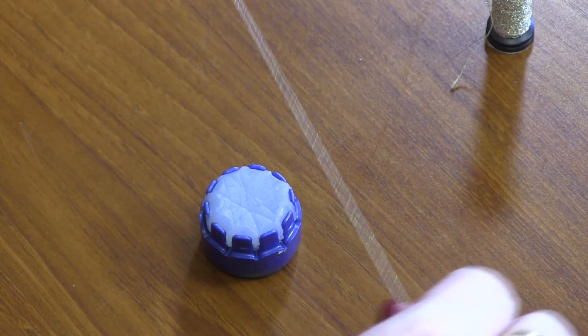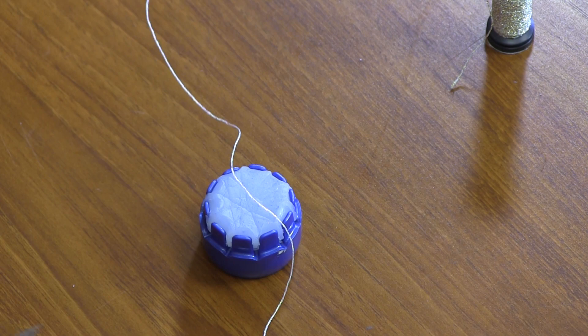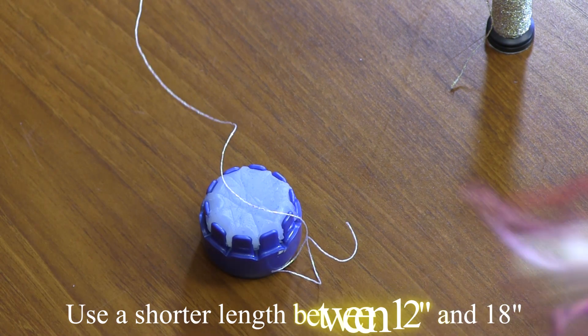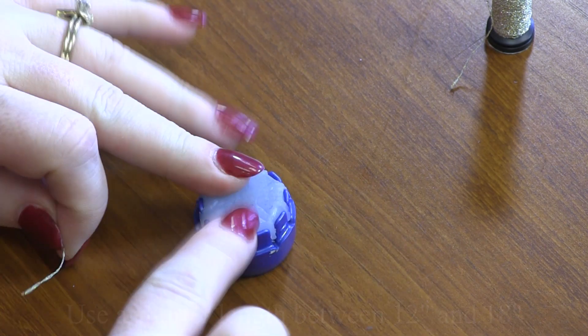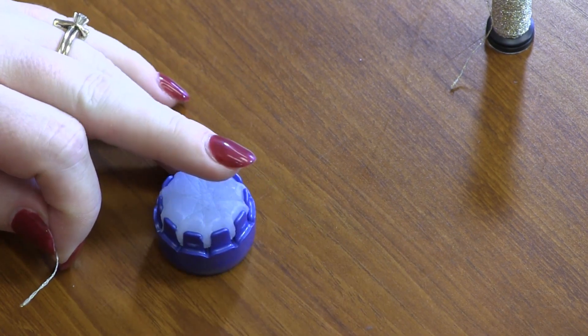Tips on how to use metallic floss in your stitching. Tip 1: I use a shorter length, between 12 and 18 inches. This helps reduce wear on the thread and keeps it nice and shiny for your stitching.